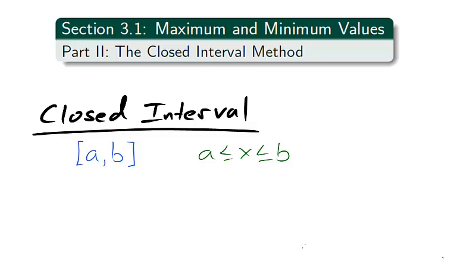When we talk about the closed interval [a,b], we are taking all values x, where a is less than or equal to x, which is less than or equal to b. The word closed is used because the endpoints are included in the interval.